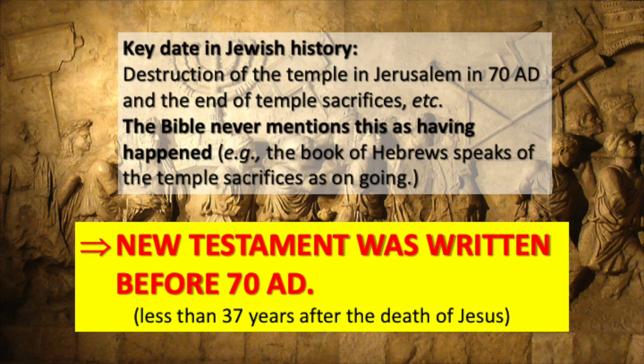In 70 AD, the temple was destroyed, the high priesthood was abolished, and temple sacrifices stopped. Jewish services and ceremonies changed because of that. Interestingly, the Bible never mentions the fall of Jerusalem as having happened — it doesn't say it happened, doesn't say 'I told you so.' There's a complete silence about this.